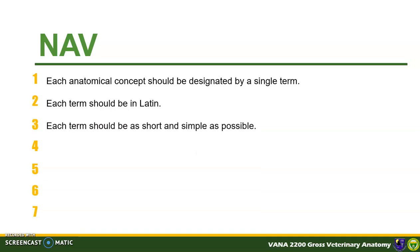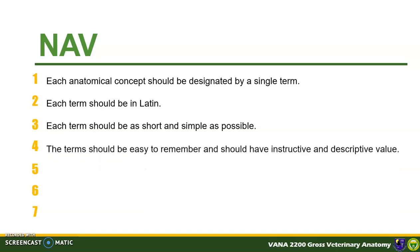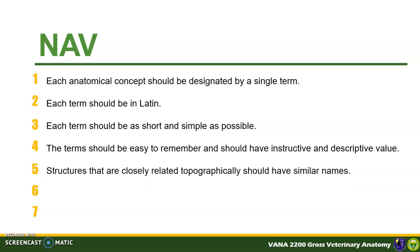Third, each term should be as short and simple as possible. Fourth, the terms should be easy to remember and should have instructive and descriptive value. Fifth, structures that are closely related topographically should have similar names. For example, femur, femoral artery, femoral vein, and femoral nerve.